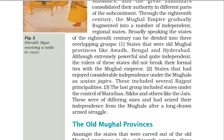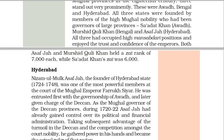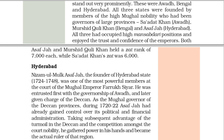The Old Mughal Provinces. Amongst the states carved out of the old Mughal provinces in the 18th century, three stand out very prominently: Awadh, Bengal and Hyderabad. All three states were founded by members of the high Mughal nobility who had been governors of large provinces — Sadat Khan (Awadh), Murshid Quli Khan (Bengal), and Asaf Jah (Hyderabad). All three had occupied high Mansabdari positions. Both Asaf Jah and Murshid Quli Khan held a Zat rank of 7000 each, while Sadat Khan's Zat was 6000.